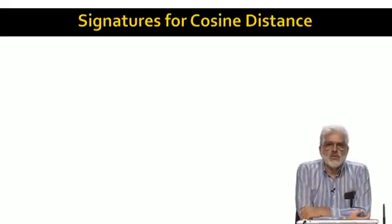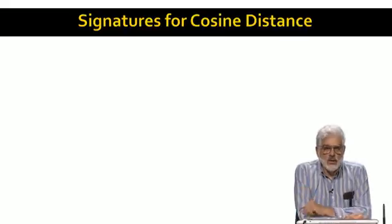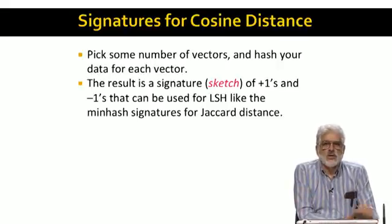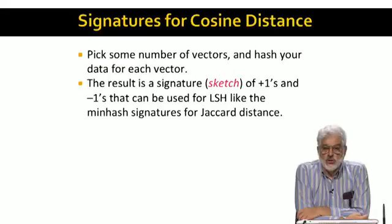Here's how we use random hyperplanes to find similar vectors in our data set, where similarity now means low cosine distance. First, we pick a number of vectors at random. This selection corresponds to picking some random permutations to serve as minhash functions. But here, instead of minhashing, we compute the dot product of each vector in our data set with each randomly chosen vector to get a sequence of plus ones and minus ones called a sketch.